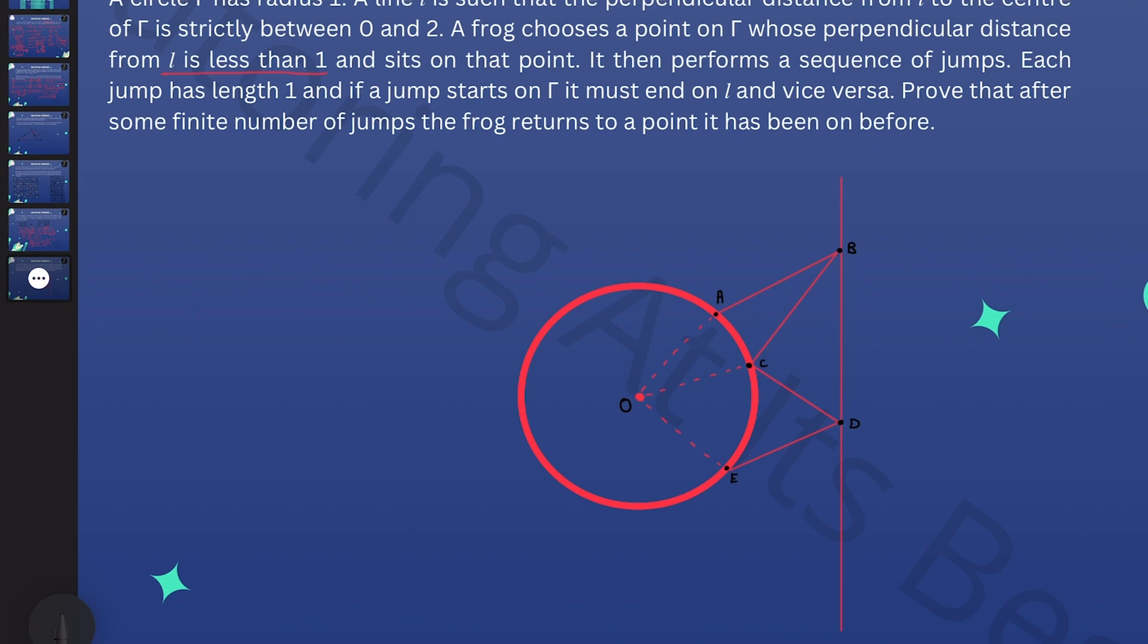The frog is at A, jumps to the line to B and jumps back from B to C. The dotted lines are also a distance of 1. A quadrilateral where the sides have all equal lengths must be a rhombus, a parallelogram where all the sides are equal. We've got a rhombus from A to B, C to O. That's this position here, that's our rhombus.